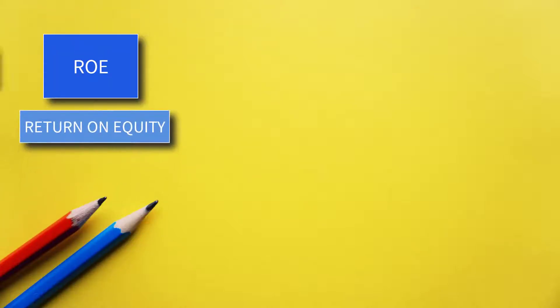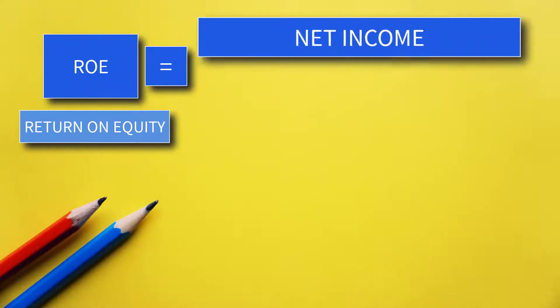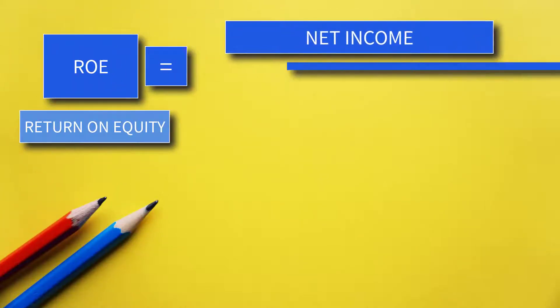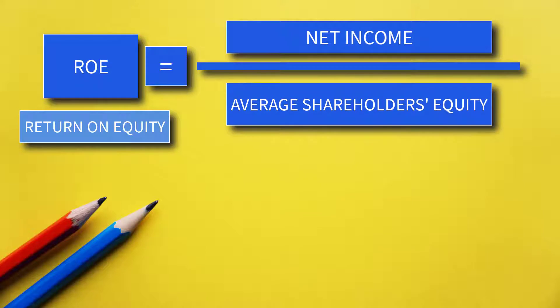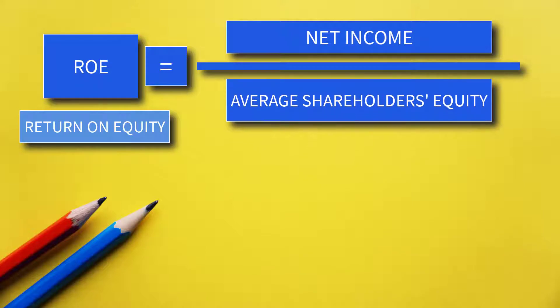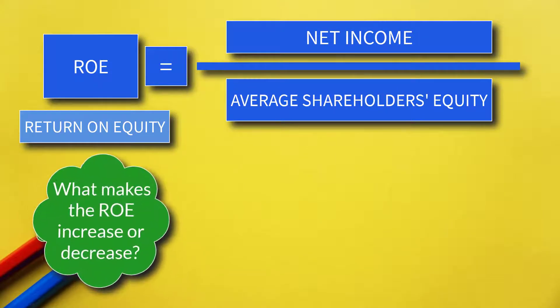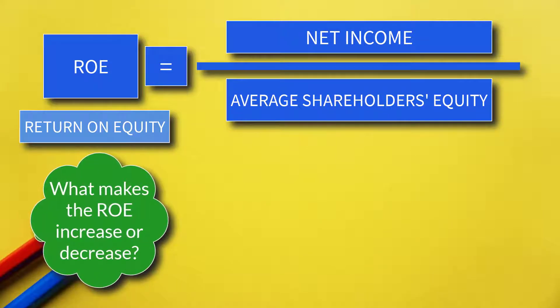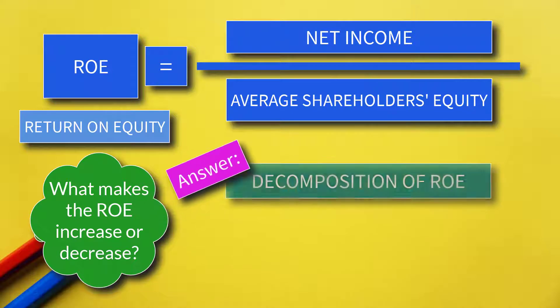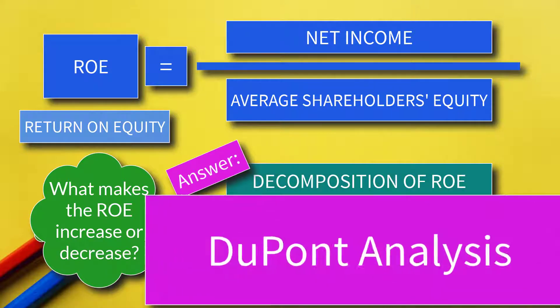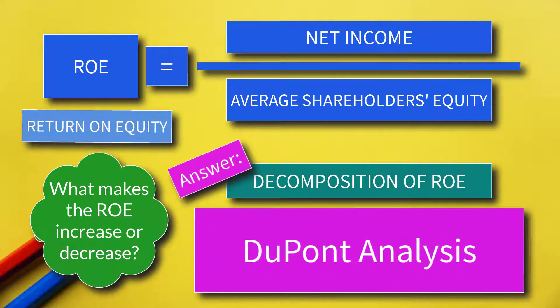ROE or Return on Equity is computed as Net Income divided by Average Shareholders' Equity. To know what makes the ROE increase or decrease, we need to decompose the ROE. This decomposition is what we call DUPONT analysis.